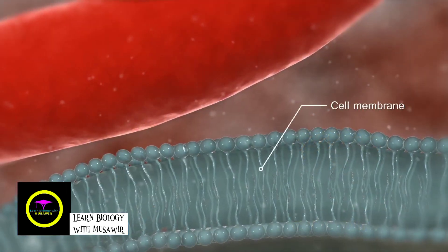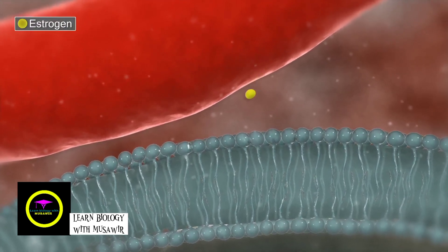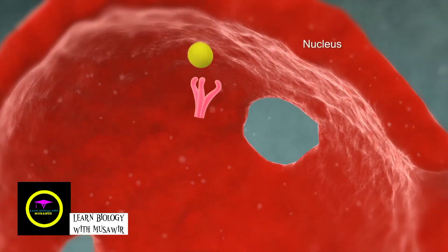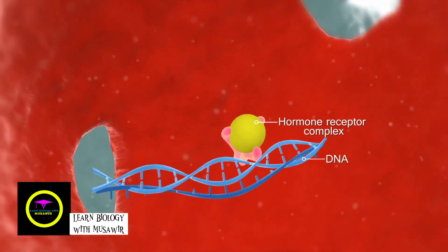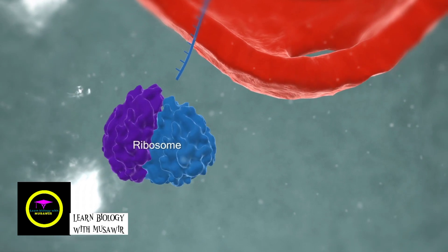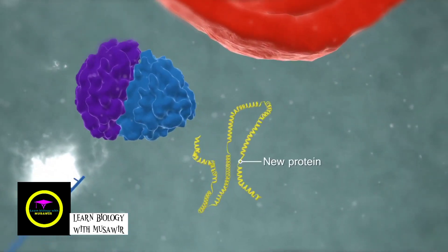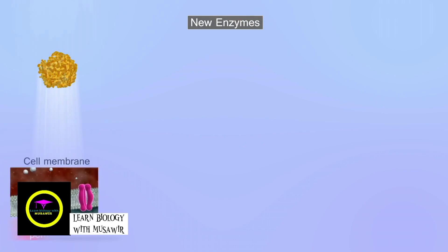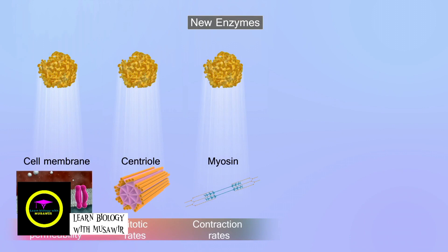Hydrophobic hormones are bound to a carrier protein as they travel through the bloodstream. These steroid hormones easily diffuse through the phospholipid bilayer of the target cell's membrane and bind with receptors within the nucleus. This binding forms a hormone-receptor complex that directly affects gene expression. Targeted DNA sequences are then transcribed into mRNA, resulting in the synthesis of new proteins. The new proteins are often enzymes which alter the target cell's activity, causing cellular responses that are unique to that hormone.